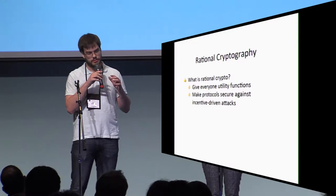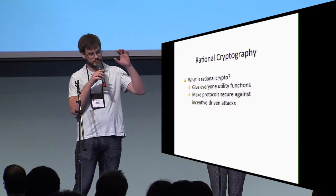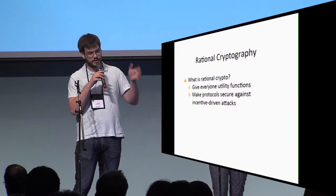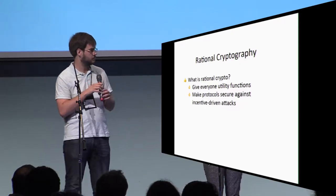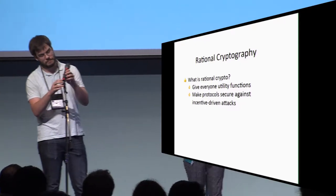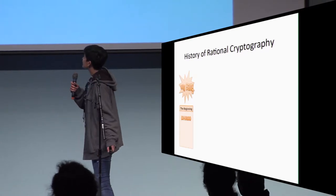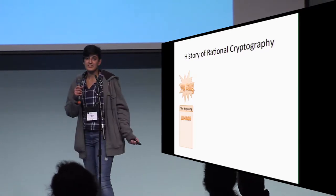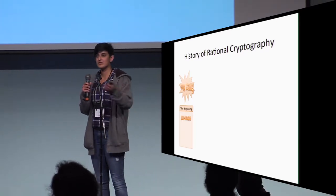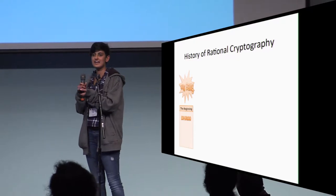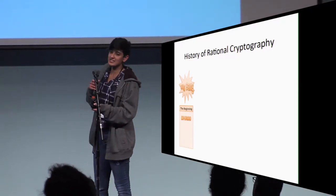We tend to worry about situations like those. And with that, I'll hand it off to Pollock. All right, let's learn some history. The beginnings of cross-pollination between cryptography and game theory can be traced back to DHR 2000.